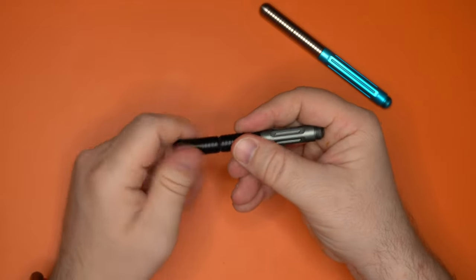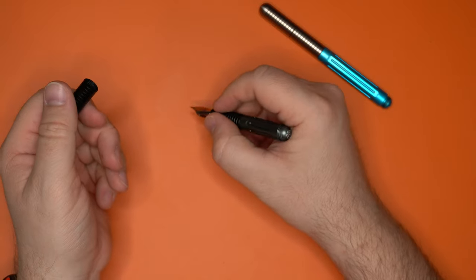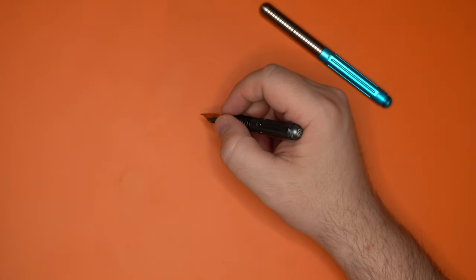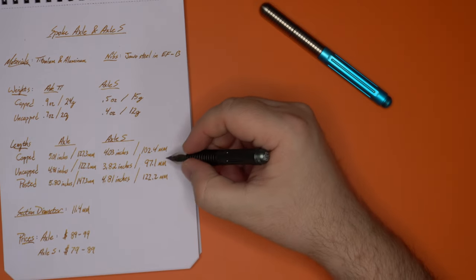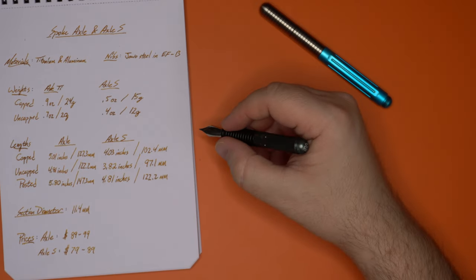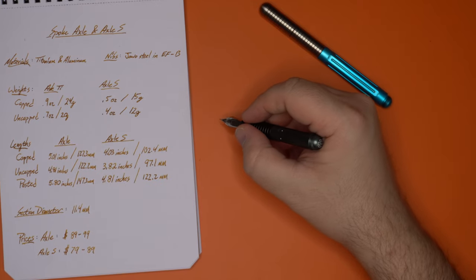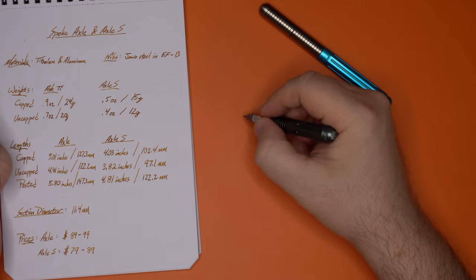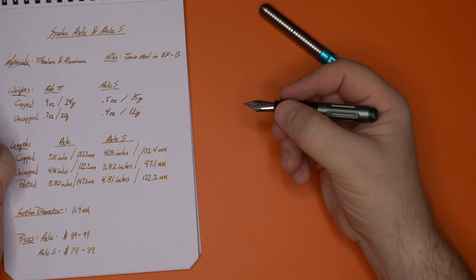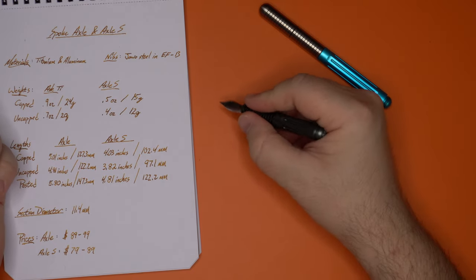So when you remove the cap here, you'll notice that this is a very short pen. Uncapped, this thing is really only coming in at 97.1 millimeters, which is under four inches long. It is quite small and I have these big old hands. And so I can jot quick notes with this uncapped and unposted, but I wouldn't want to write for very long.